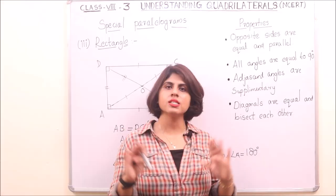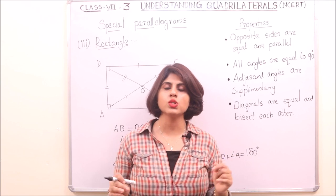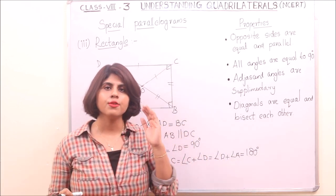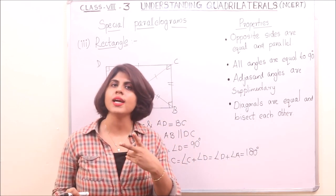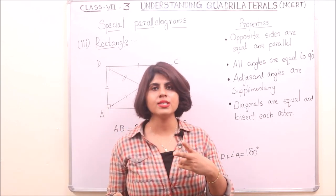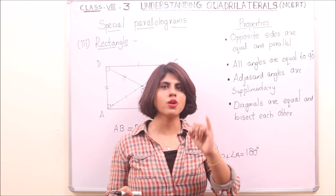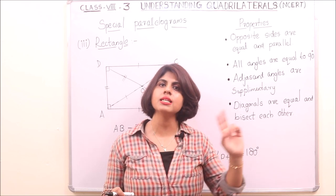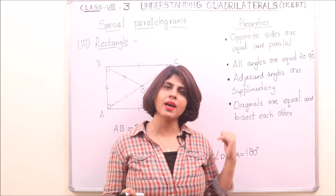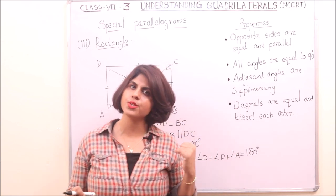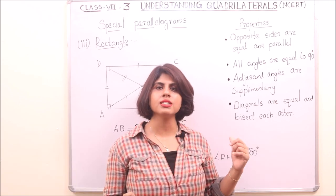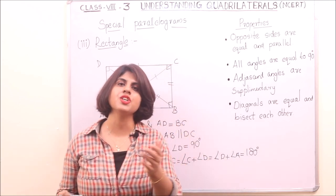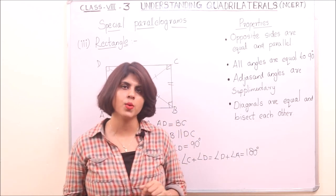This is all about quadrilaterals. We discussed the first two kinds — trapezium and kite — and their properties in the first video. And here we have discussed parallelogram and the special kinds of parallelogram. These two parts will help you to do exercises 3.3 and 3.4.